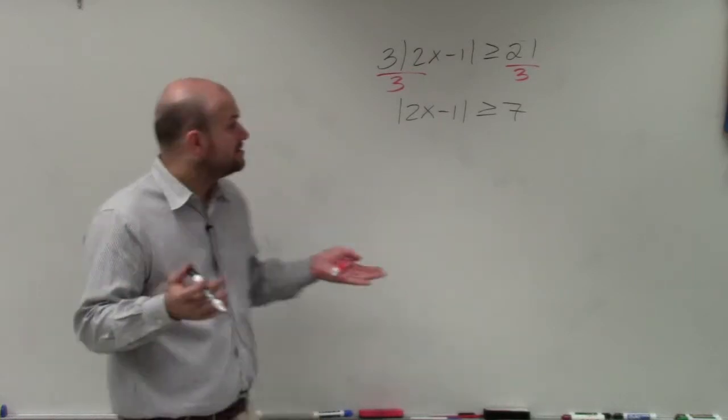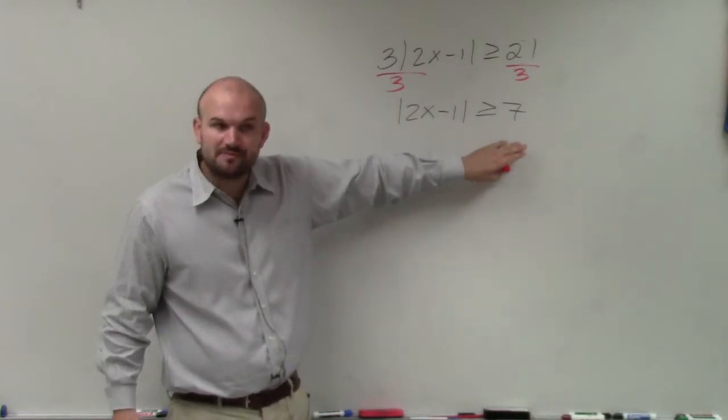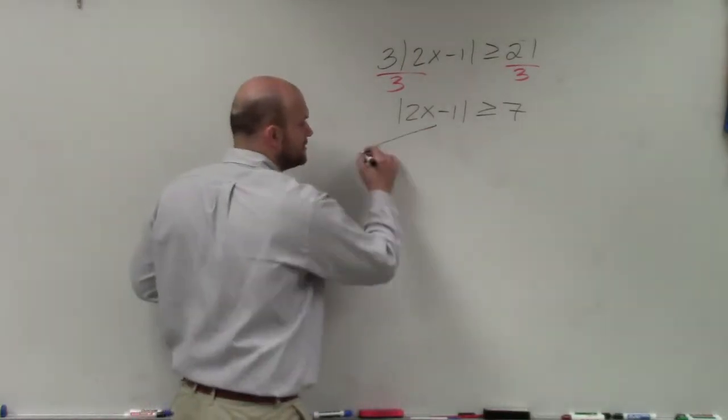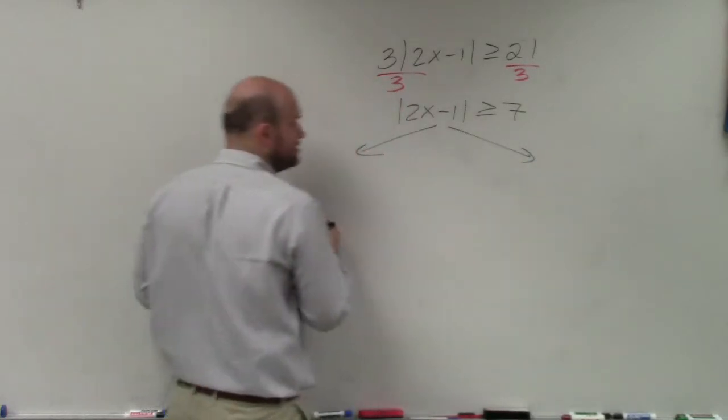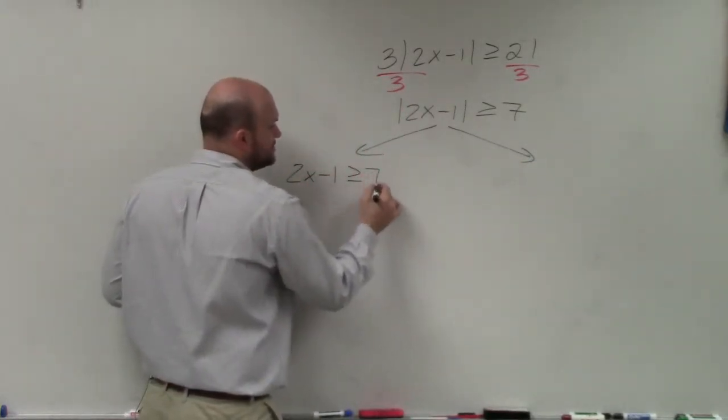You flip it, right? So if we're going to negate a side, then we're going to have to flip the sign. So you still create your two cases, just like you did with equations. It's 2x minus 1 is greater or equal to 7.